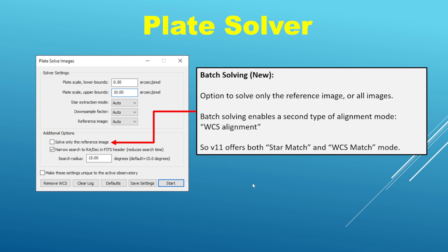For example, the alignment routine now offers a new mode of operation called WCS match mode. This is a World Coordinate System match and makes use of the plate solution on every image to perform the alignment. So if you ever have issues with the conventional star match routine, you now have a fallback option in WCS match. I've had very good positive results with it — it works very effectively, but it does require each image to be plate solved, which is one scenario where you might try batch solving.